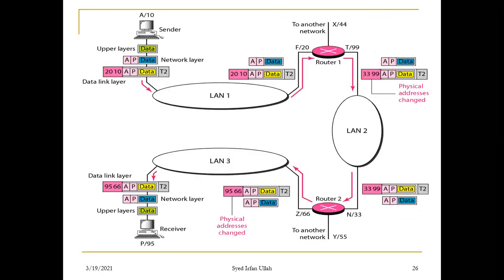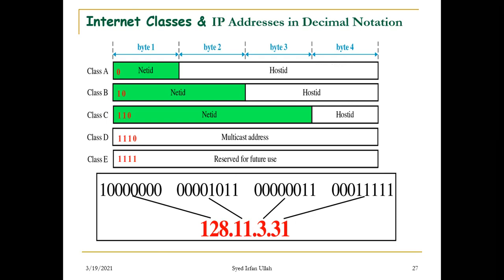Based on this concept of net ID and host ID, we divide IP addresses into two major types: classful IP addressing and classless IP addressing. We will discuss classless IP addressing later in this course. In today's topic, I am discussing classful IP addressing. Based on IANA, IP addresses are divided into five classes: Class A, Class B, Class C, Class D, and Class E.